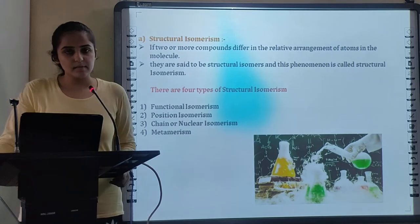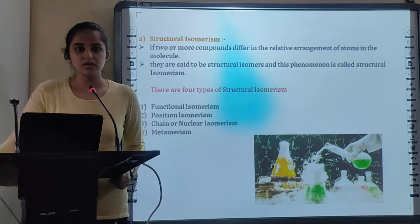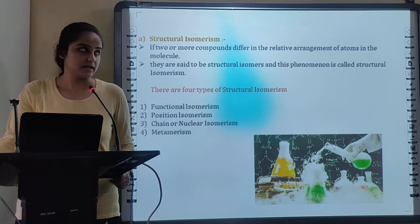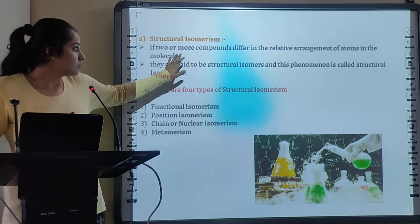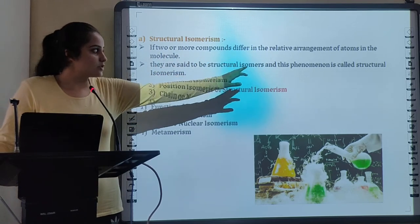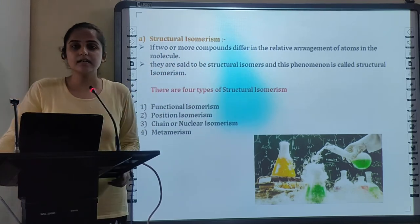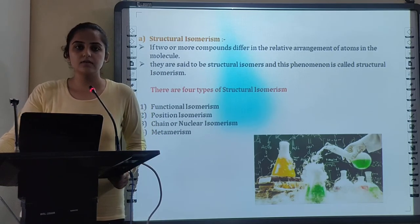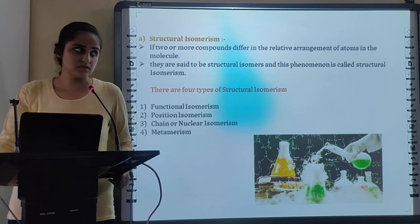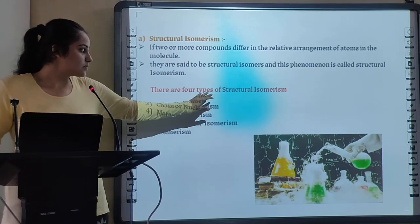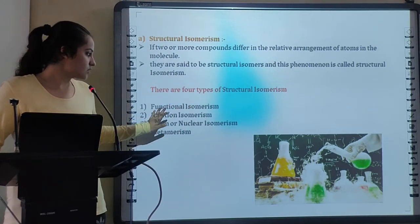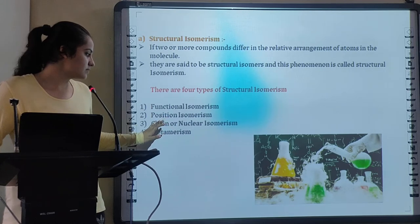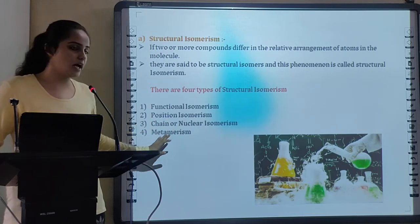Next is the concept of Structural Isomerism. Structure, the word tells us about arrangement. So if two or more compounds differ in Relative Arrangement of Atoms in the Molecule, they are said to be the Structural Isomers of each other and this phenomenon is known as Structural Isomerism. Based on this, there are four types of Structural Isomerism: Functional Isomerism, Position Isomerism, Chain or Nuclear Isomerism and Metamerism.